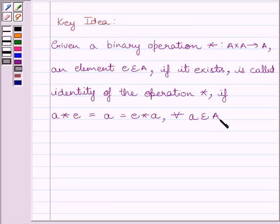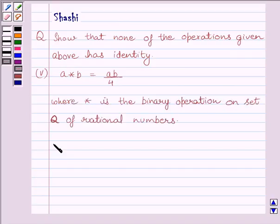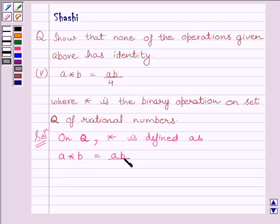Let us now start with the solution. We know, on set Q, binary operation star is defined as A star B is equal to AB upon 4.